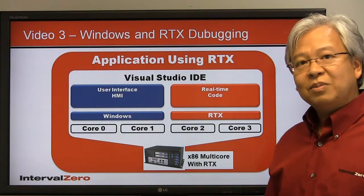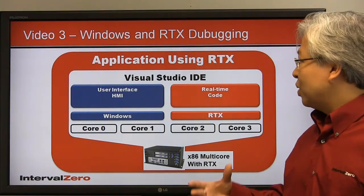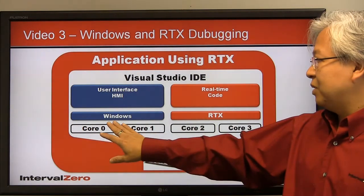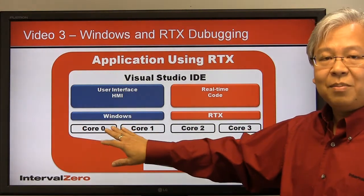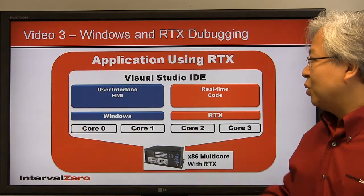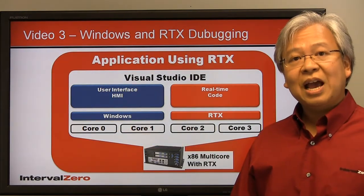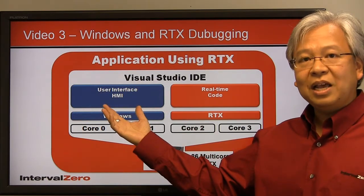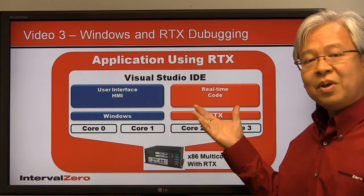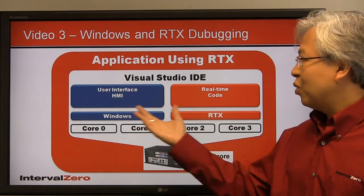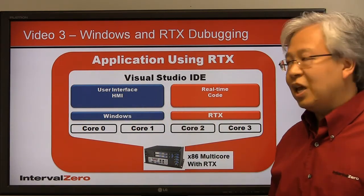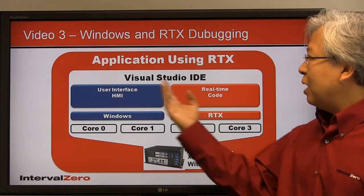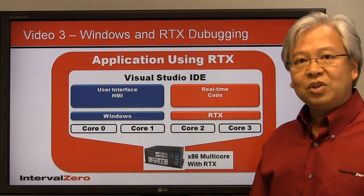Here in this diagram, which should look familiar, one of the big key benefits of using RTX is being able to fully leverage the Windows environment and the full ecosystem. At a certain point, you're going to have to debug this kind of interaction — you might have a powerful HMI running and talking to real-time code on RTX, and you need to debug the communications, which usually happen inside shared memory.